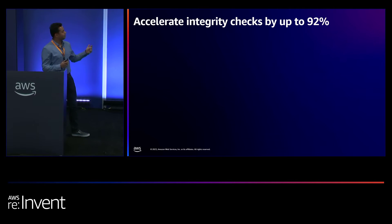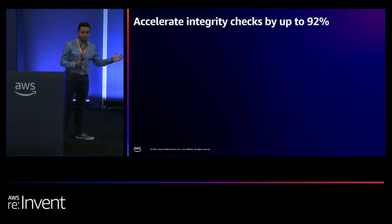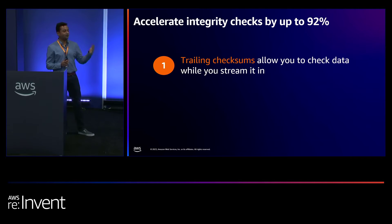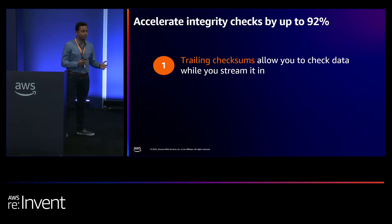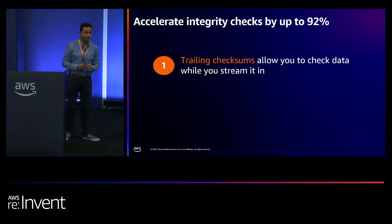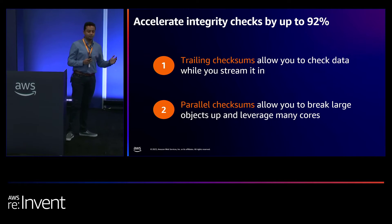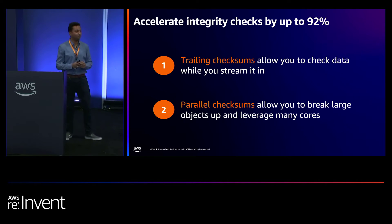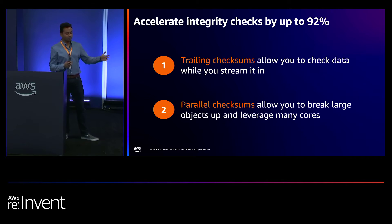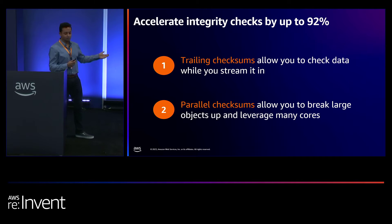I want to talk about our advanced integrity checking capabilities. The first is a trailing checksum — instead of adding a checksum as a header to an object, while you're streaming your bytes to S3, we append the checksum as a trailer. The second is a parallel checksum — instead of calculating the whole object checksum for a large object, we calculate the checksum for each part and farm out that operation onto multiple cores, giving you parallel performance optimizations.